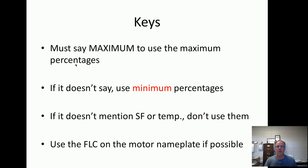The keys: it must say 'maximum' to use the maximum percentages. If it doesn't say, use minimum percentages. If it doesn't mention service factor or temperature, use 115% or 130%. You can keep these in your head: all other motors — 115% minimum; service factor 1.15 or greater, or temperature rise 40 degrees or less — 125%; and for maximum: 140% or 130%.